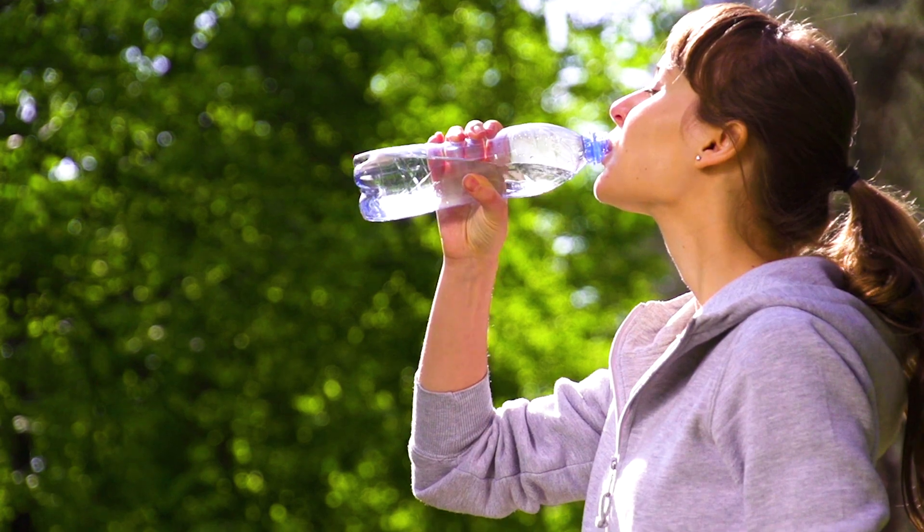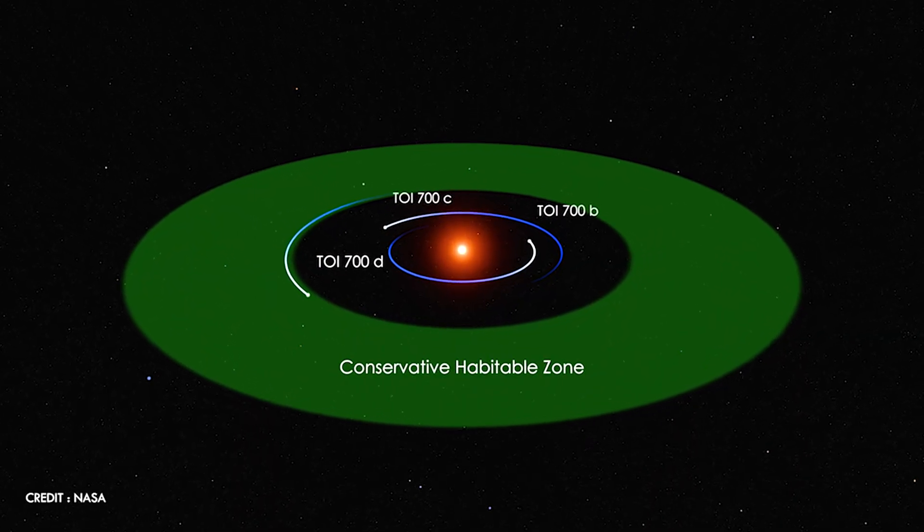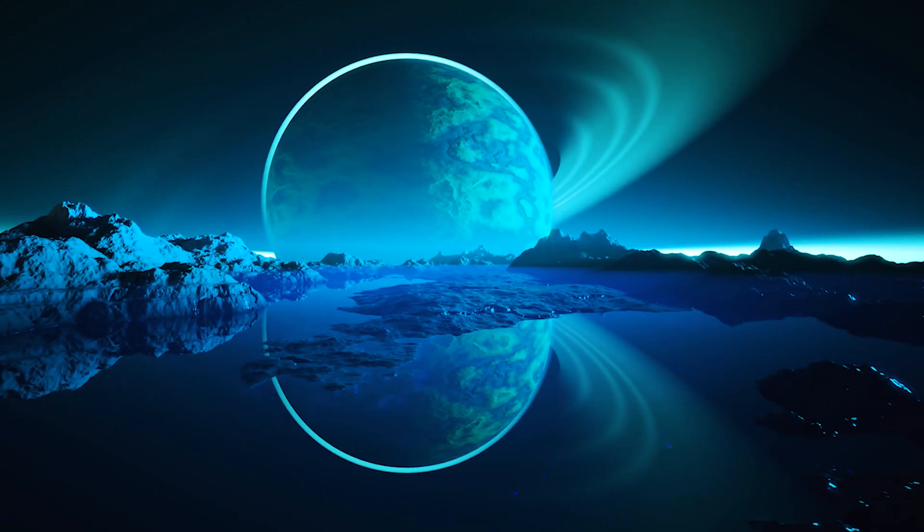The second criterion is the presence of water, which is vital for life to exist. If a planet is located in a habitable zone of its star, there is a high likelihood that liquid water exists on its surface.